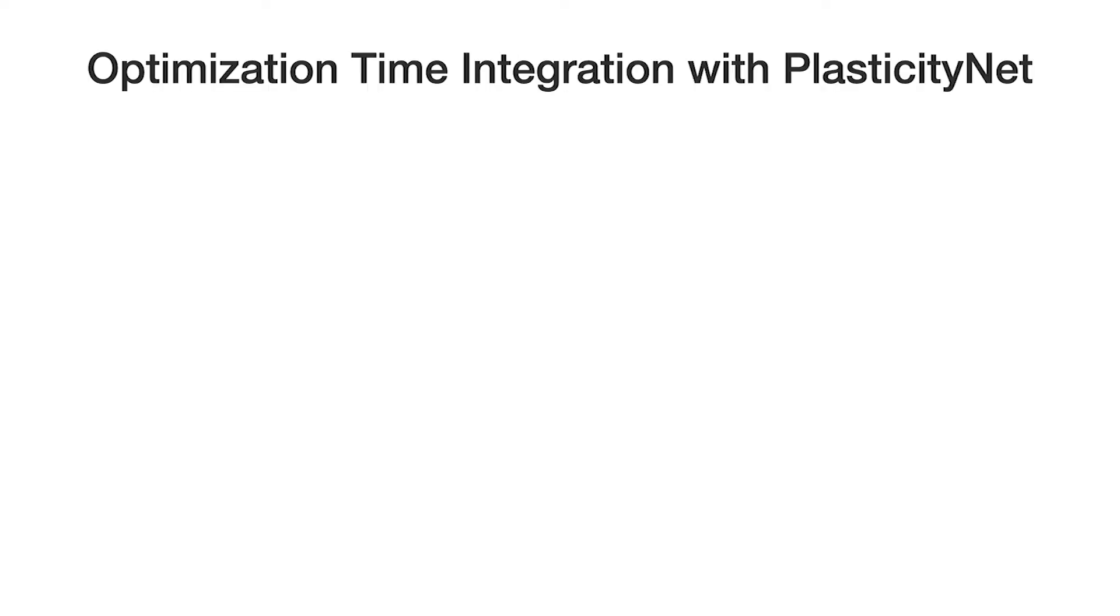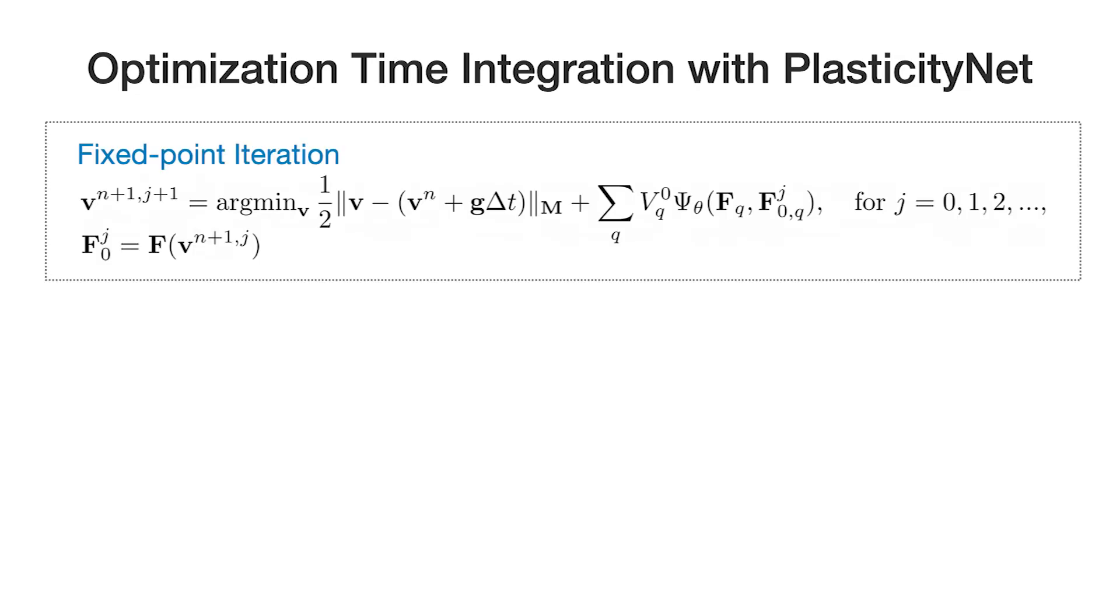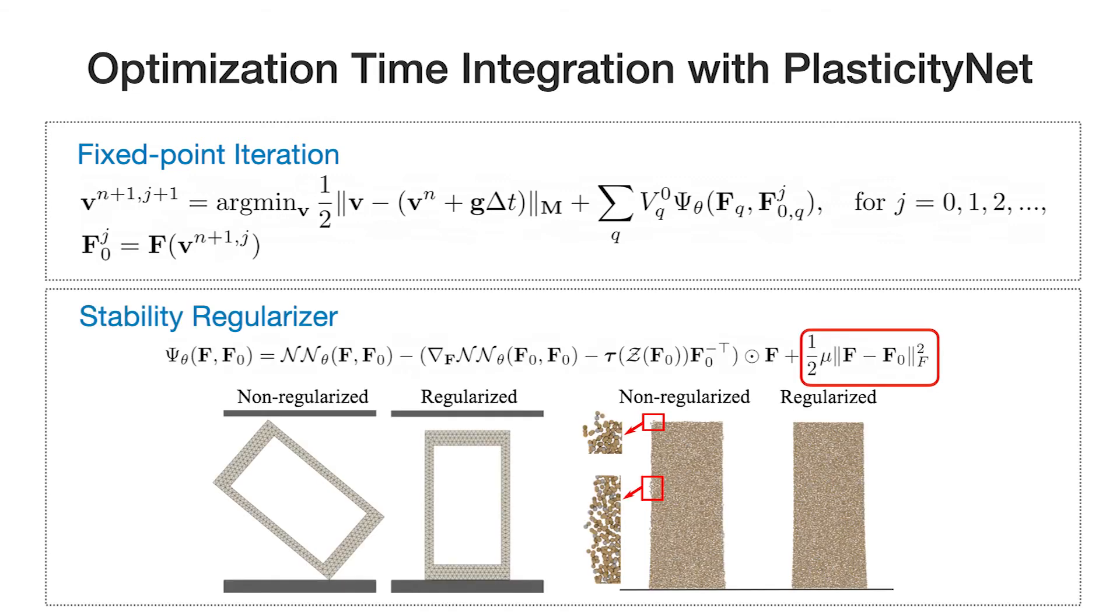To utilize PlasticityNet in simulation frameworks, we apply a fixed-point iteration on F0 to approach the accurate solution of the original nonlinear system. A regularizer is also added to stabilize the simulation.